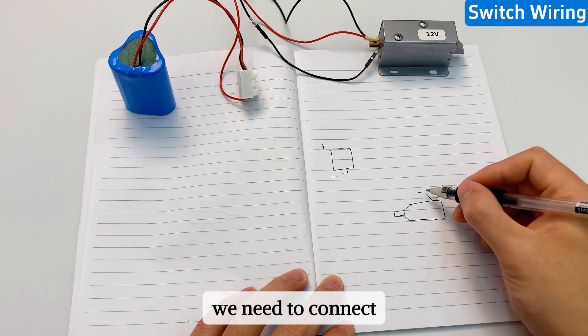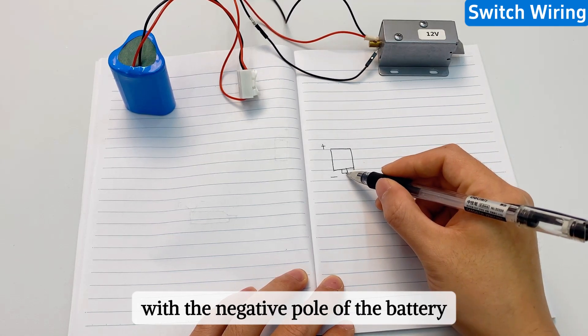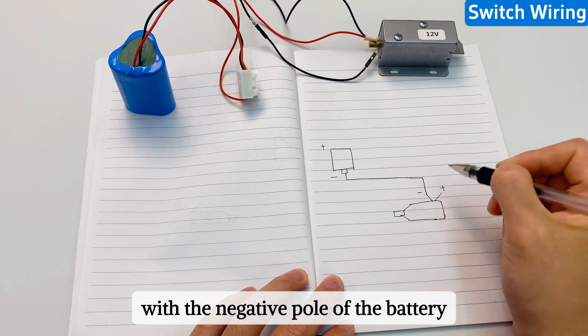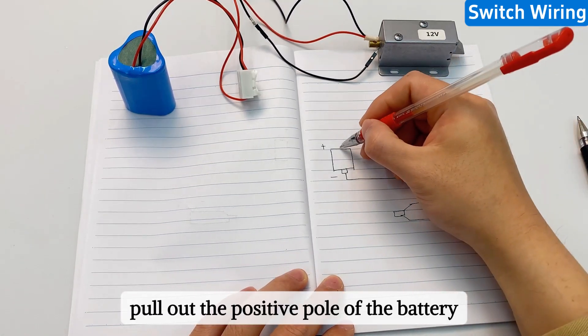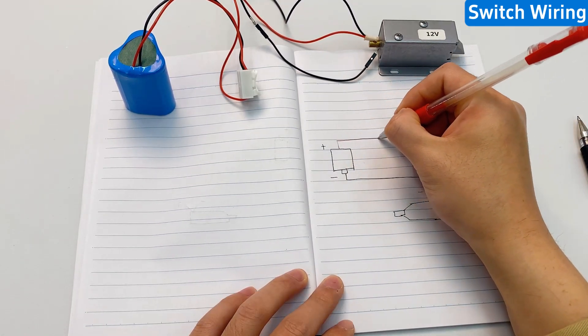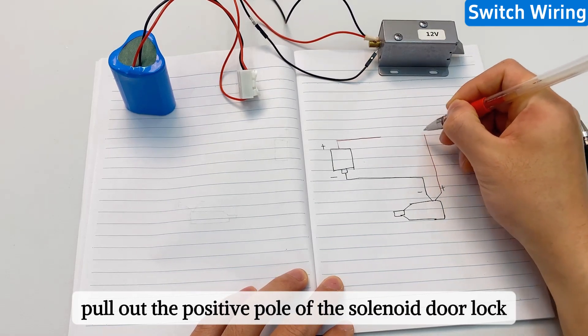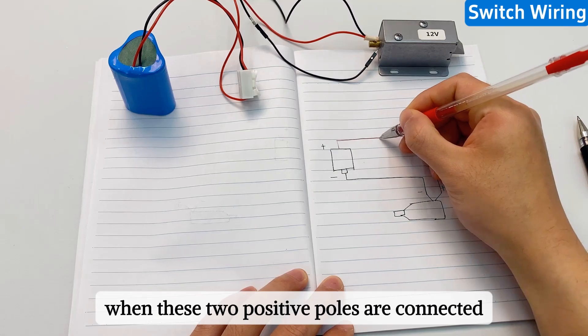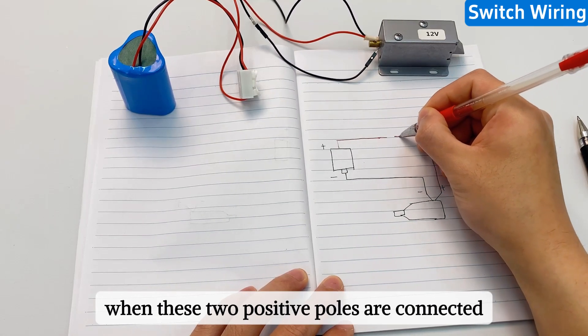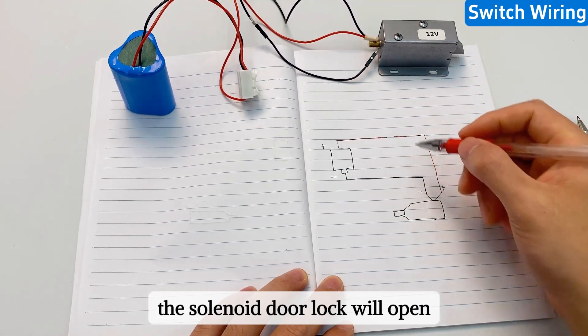We need to connect the negative pole of the solenoid door lock with the negative pole of the battery. Pull out the positive pole of the battery. Then pull out the positive pole of the solenoid door lock. When these two positive poles are connected, the solenoid door lock will open.